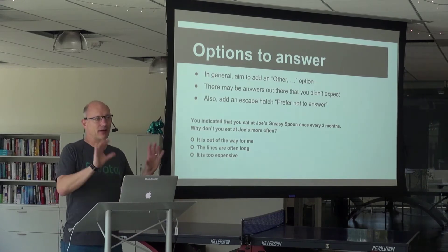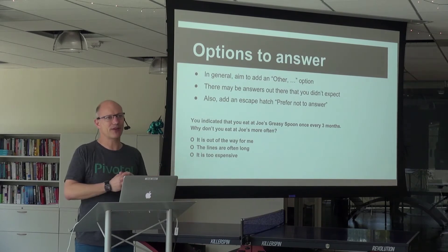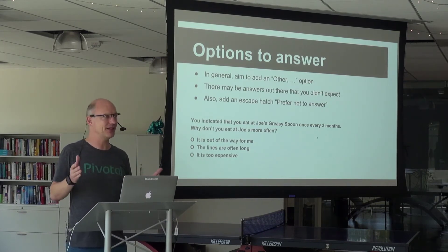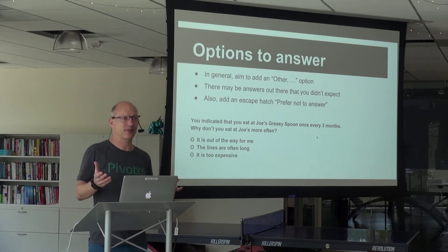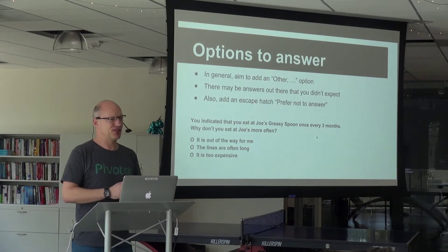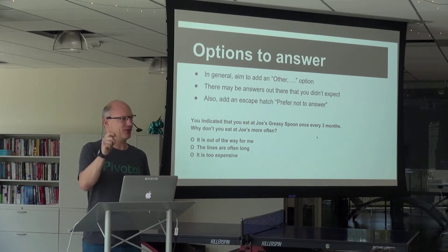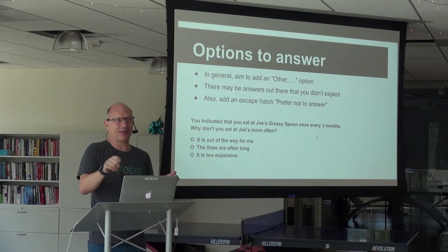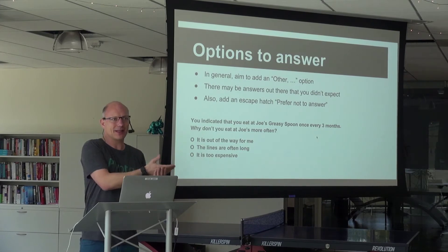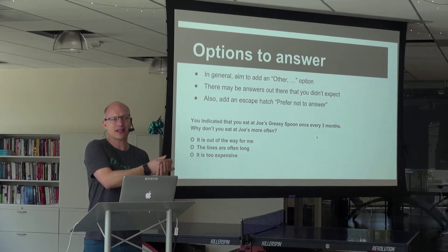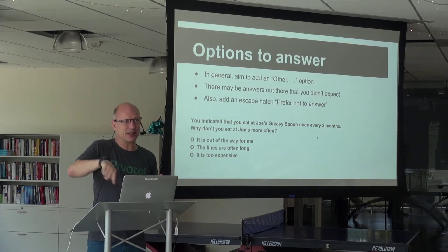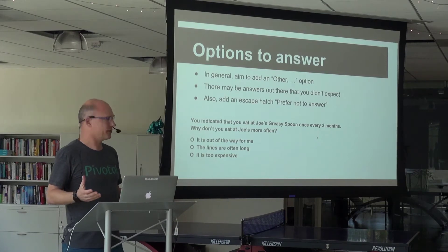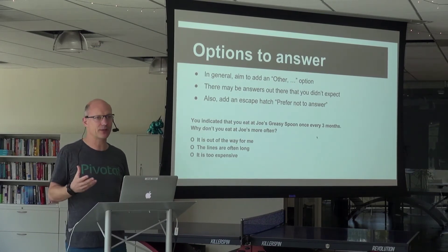Now it comes to the answer options. Add an 'other' option and let people fill it in, because there may be many answers you didn't expect. In the 50s, people thought gender was binary, and all questionnaires showed that — people ticked male or female because those were the only options. Now you can say 'other, please specify' and people come up with all kinds of things. It's not that it didn't exist before, but we didn't know to ask for it. Also always add an escape hatch: 'prefer not to answer.'